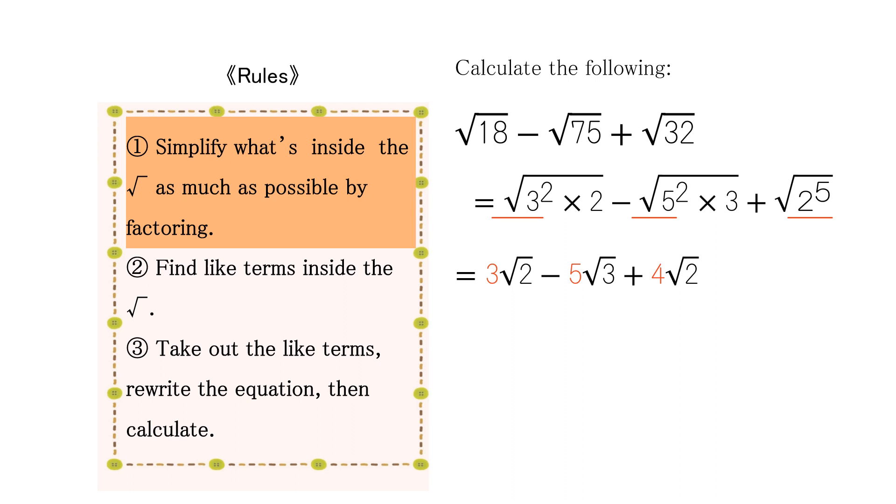Rewriting this, we get 3 square root of 2 minus 5 square root of 3 plus 4 square root of 2.